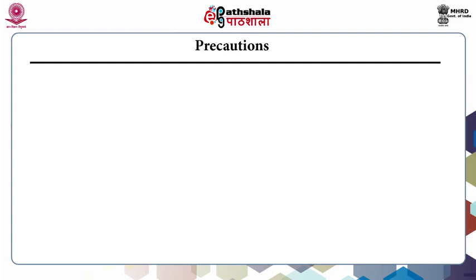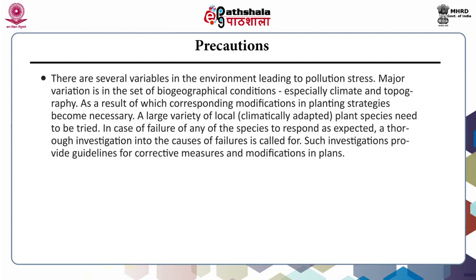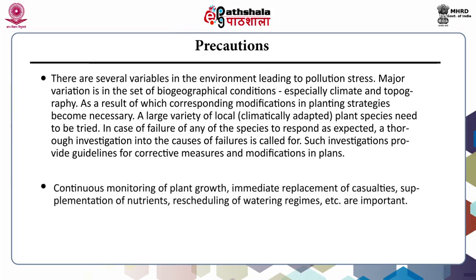There are some precautions that should be taken while developing the green belt. There are several variables in the environment leading to pollution stress, with major variation in biogeographical conditions, especially in terms of climate and topography. As a result, corresponding modifications in planting strategies become necessary and a large variety of local plant species need to be tried. In case of failure of any species to respond as expected, a thorough investigation should be made into the causes of failure. Continuous monitoring of plant growth, immediate replacement of casualties, supplementation of nutrients, and rescheduling of watering regimes are very important.